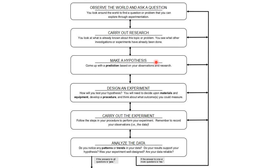Another possible scenario, maybe you go through all of the steps in order. For example, maybe you observe the world and ask a question, you carry out research, you make a hypothesis. But when you are designing your experiment, you realize that you're not happy with your prediction. So in that case, you would need to go back and rewrite your hypothesis before moving back on and finishing designing your experiment. The key point here is that you don't always follow the exact same steps in the exact same order from start to finish.